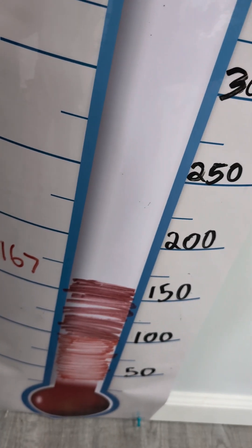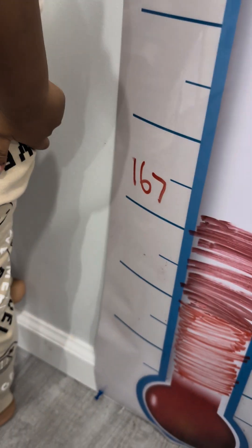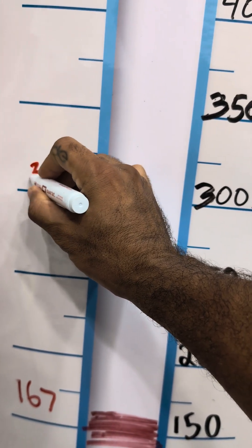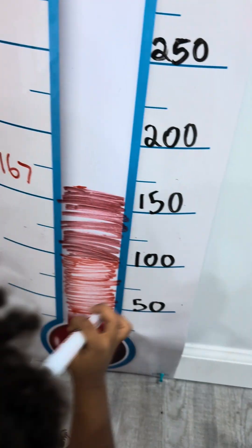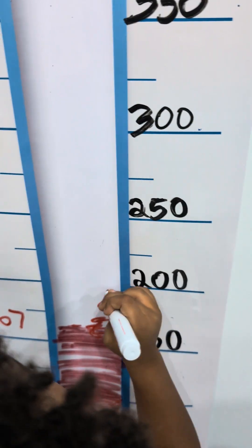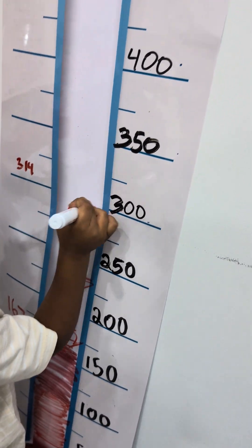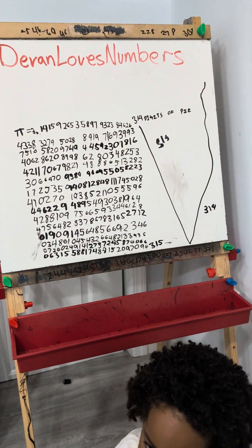All right, so now we have to put color in three hundred and fourteen. Do you want to do the honors? Three hundred and fourteen — yes, so look. Three hundred and fourteen is about right here. So we have to color it all the way up here. You want to do it? Yeah. Okay, go ahead. Color it up with this red one. Color it all the way up here and stop right there. Stop. Okay. Good job. Three hundred and fourteen digits of pi!